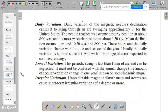And then we have the daily variation, daily variations of the magnetic needle's declination, and it causes it to swing through an arc and averaging approximately 8 minutes in the United States.